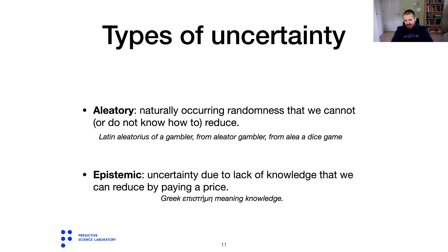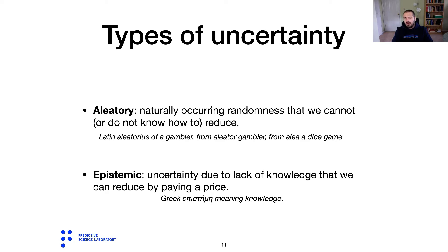Epistemic uncertainty, on the other hand, is due to lack of knowledge about something. It is not knowing something because you haven't measured it yet, and it is in principle at least something that you can reduce. It's uncertainty that you can reduce if you're willing to pay the price — that is, if you are willing to run an experiment that will measure the thing that you don't know anything about.